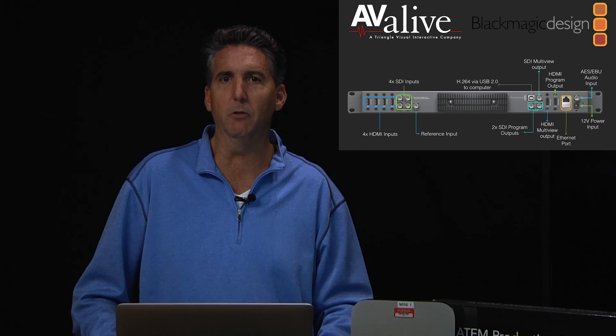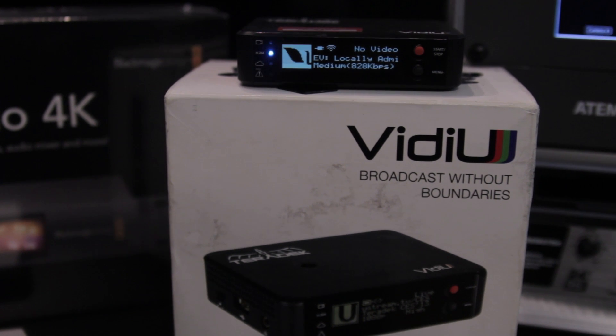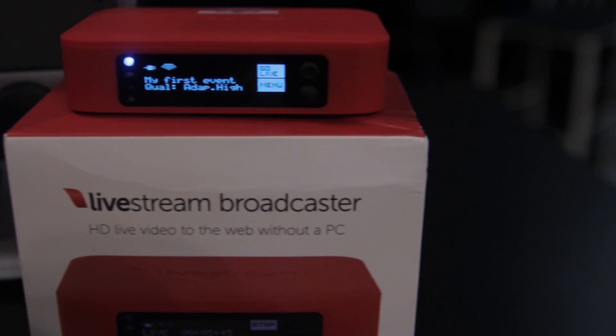Once you have that into your switcher, you're able to take your program out — which comes out in either HDMI or SDI — to your favorite encoding source. A couple of encoding options are a well-built Mac mini or MacBook with at least 16 gigs of RAM and an i7 chipset, or a standalone encoder like the Teradek video or live streaming broadcaster that takes your HDMI out and encodes it directly to your favorite CDN.